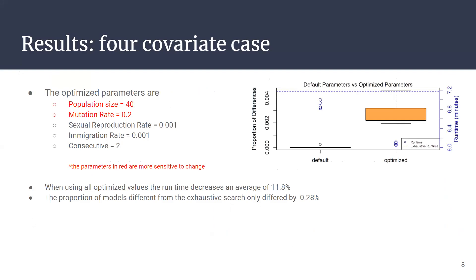We then ran the optimized values and found that the runtime decreased an average of 11.8%, and the proportion of models only differed from the exhaustive search by 0.28%.